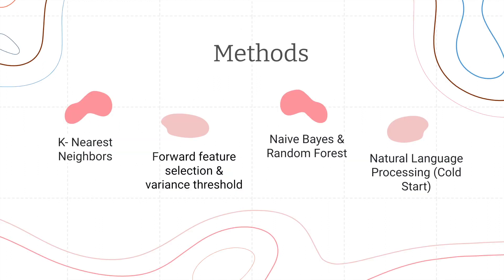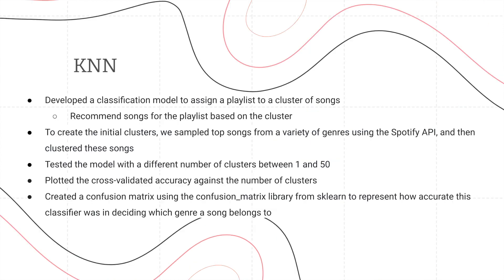The main methods we used for our project were KNN, forward feature selection and variance threshold, Naive Bayes and random forests, and natural language processing, which in particular we used to solve the cold start problem.